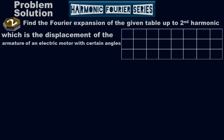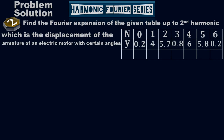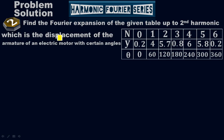This is the given table where these are the n values, these are the y values, and these are the theta values. The question asks to find the Fourier series up to second harmonic of this table, which is the displacement of the armature of an electric motor. Y is the displacement of the armature, and theta represents the certain angles.